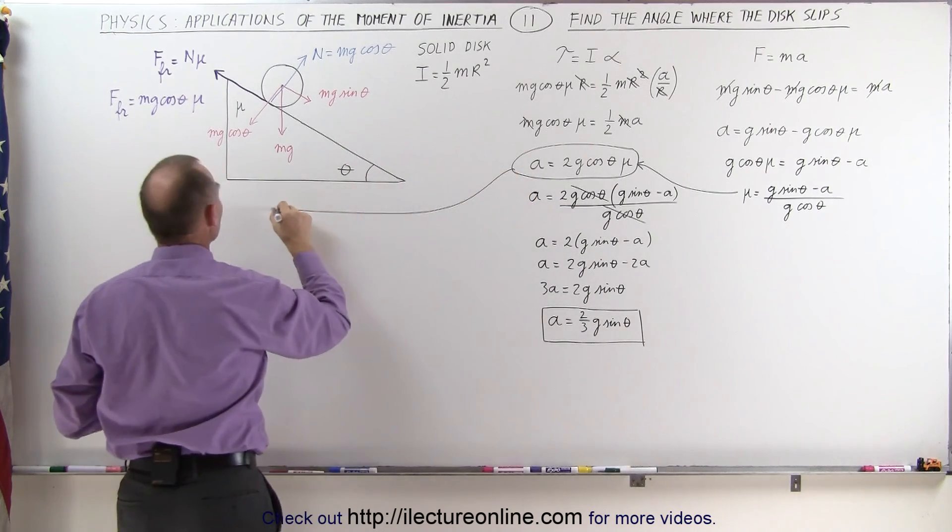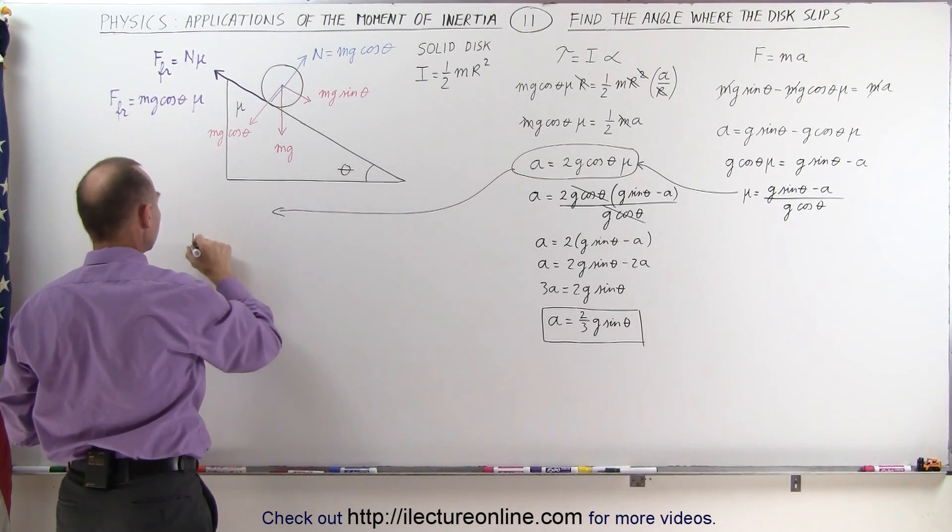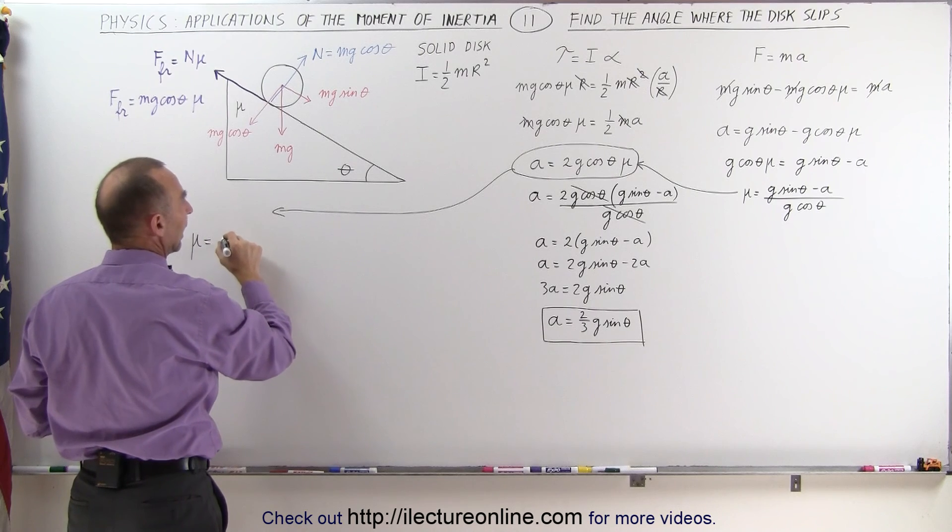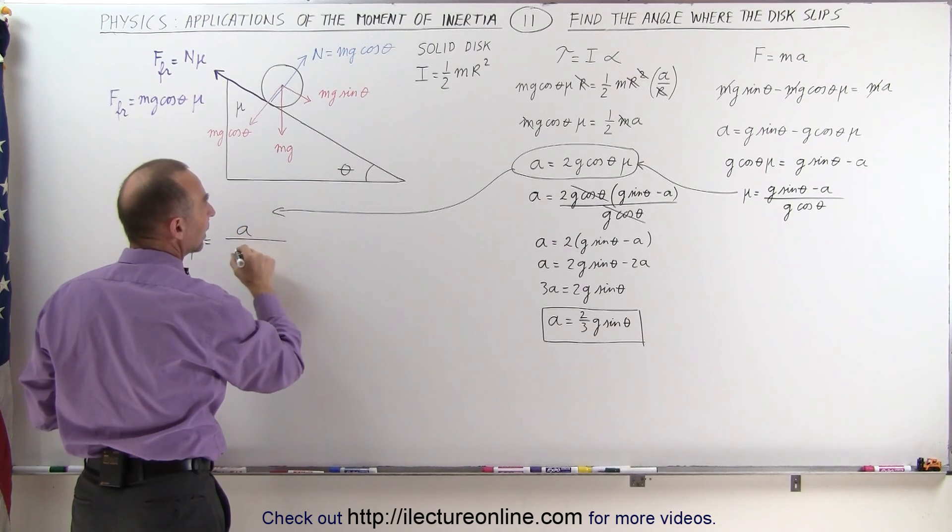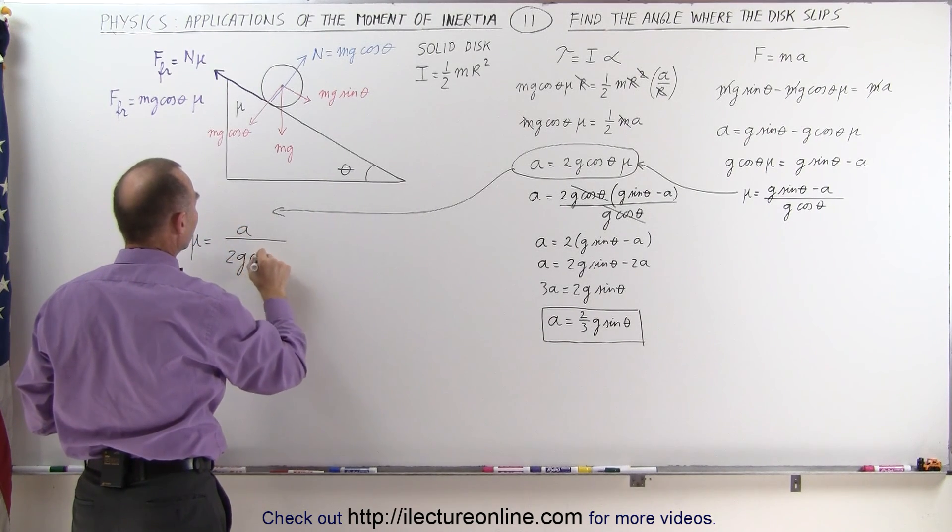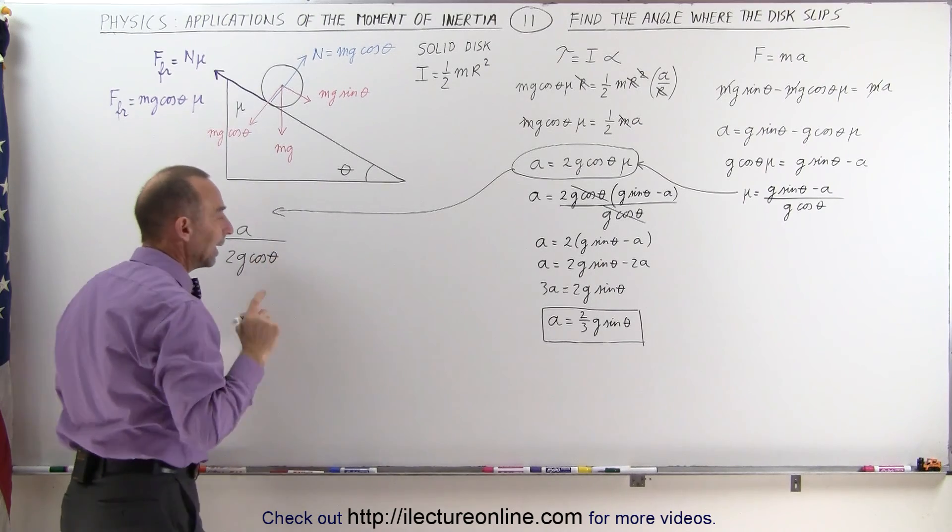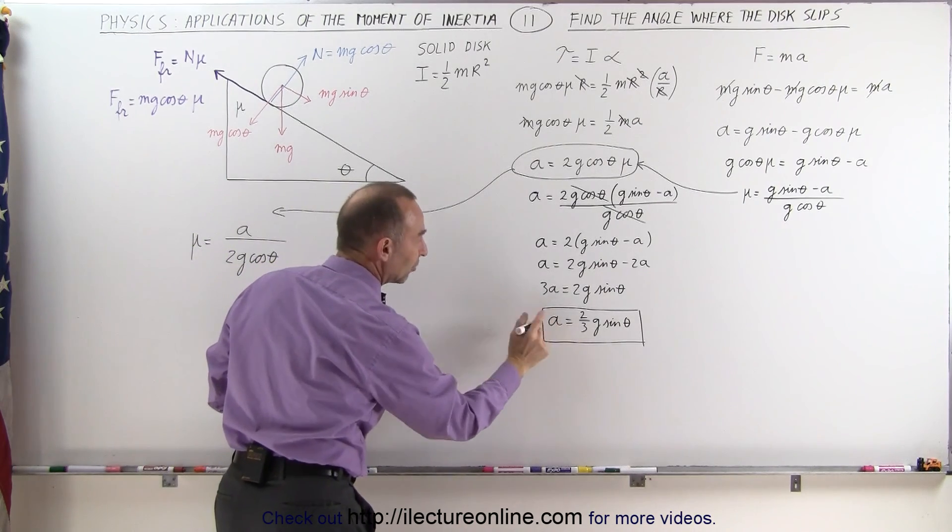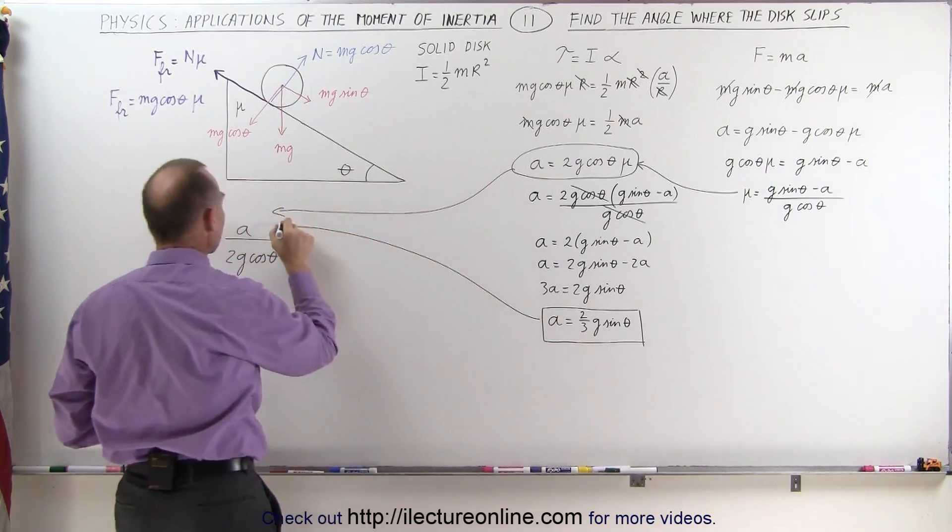So starting here we can say that mu is equal to a divided by 2g times the cosine of theta. And then we realize that a is equal to this, so we can then plug this part in here.